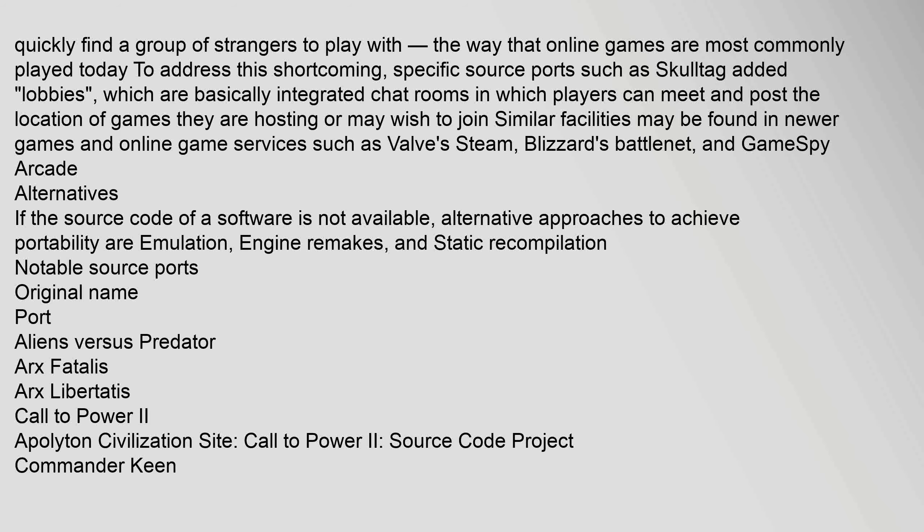To address this shortcoming, specific source ports such as Skulltag added lobbies — basically integrated chat rooms in which players can meet and post the location of games they are hosting or wish to join. Similar facilities may be found in newer games and online game services such as Valve Steam, Blizzard's Battle.net, and GameSpy Arcade. If the source code of a software is not available, alternative approaches to achieve portability are emulation, engine remakes, and static recompilation.